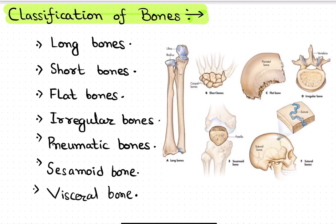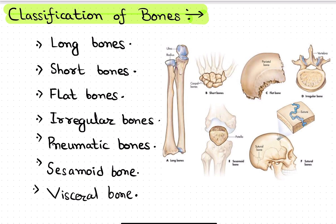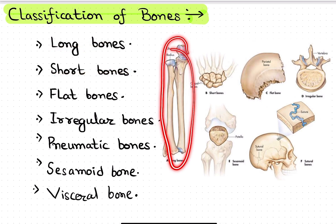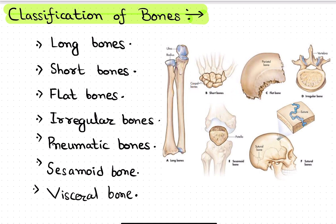Hello everyone, today in this lecture we are going to study about classification of bones. Bones are classified as long bones, short bones — as you can see, this is a long bone and this is a short bone. Then we have flat bones, like ribs, which are also flat bones.